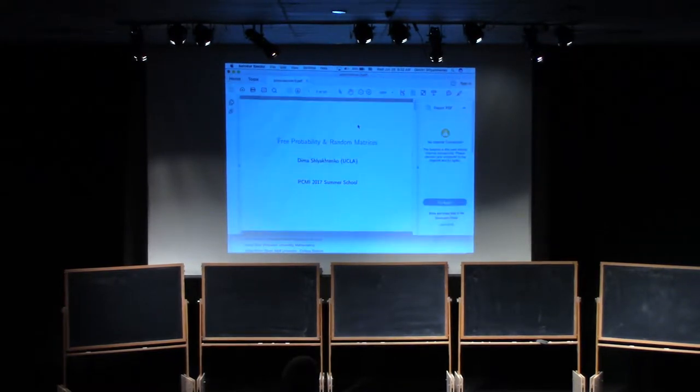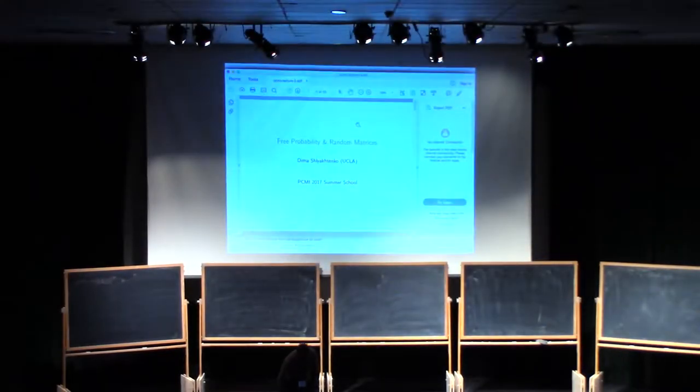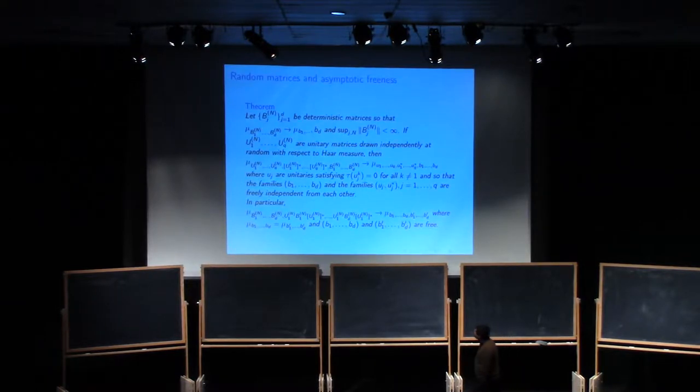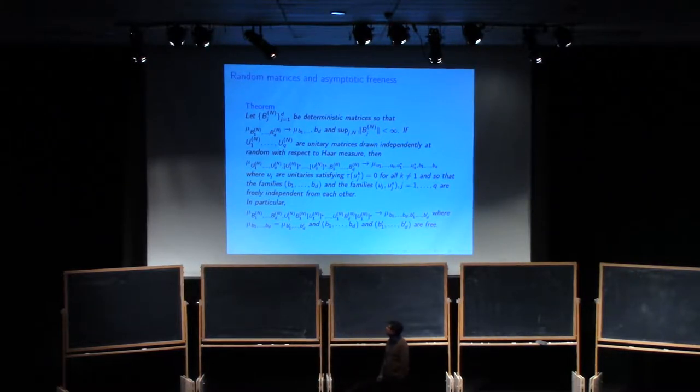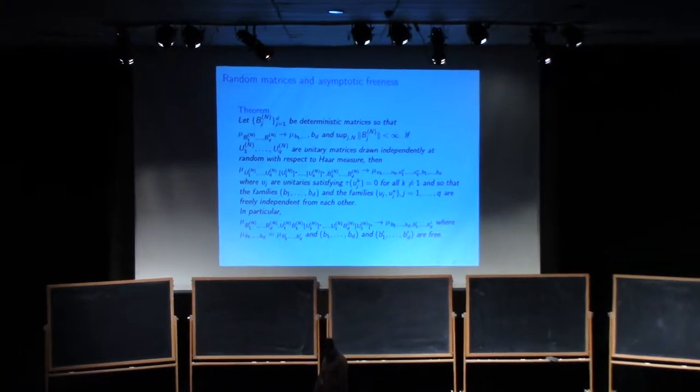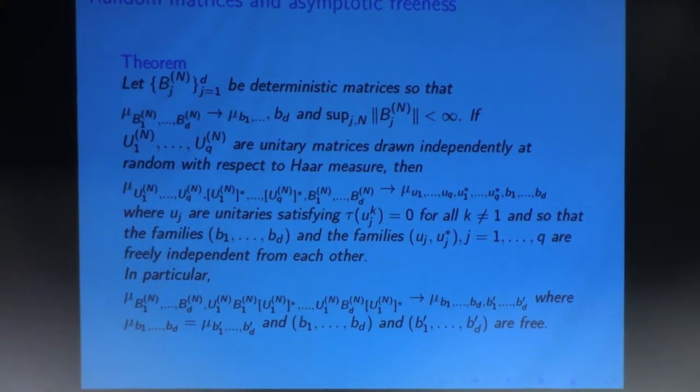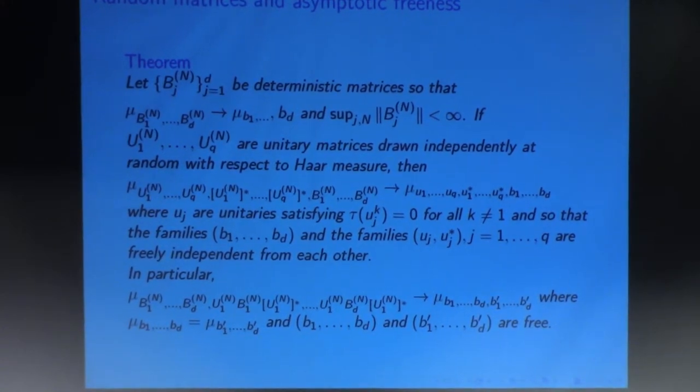Okay, so this is IPAM, Institute for Pure and Applied Mathematics. So my third lecture I will finally get to random matrices in full force. I want to give you two theorems that concern asymptotics of random matrices and freeness. Basically, things become freely independent. It looks even more intimidating than I thought, but basically the idea is this.